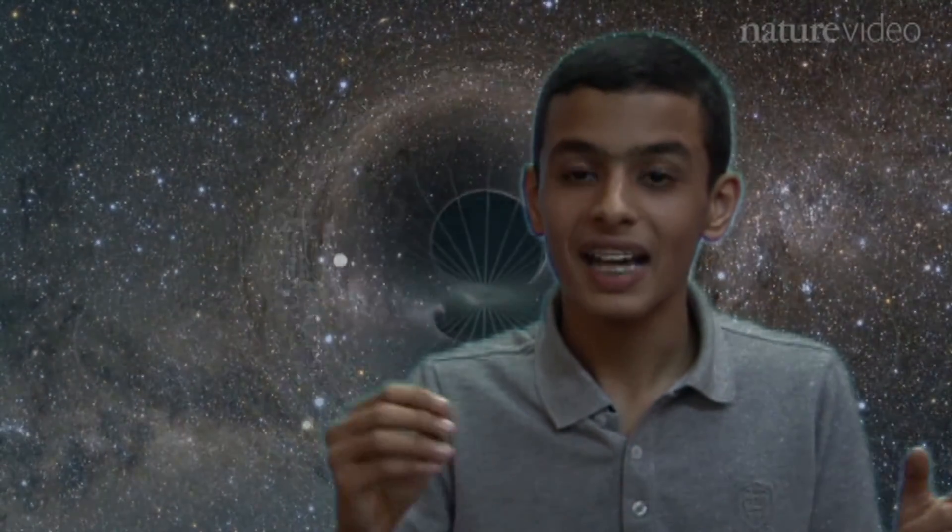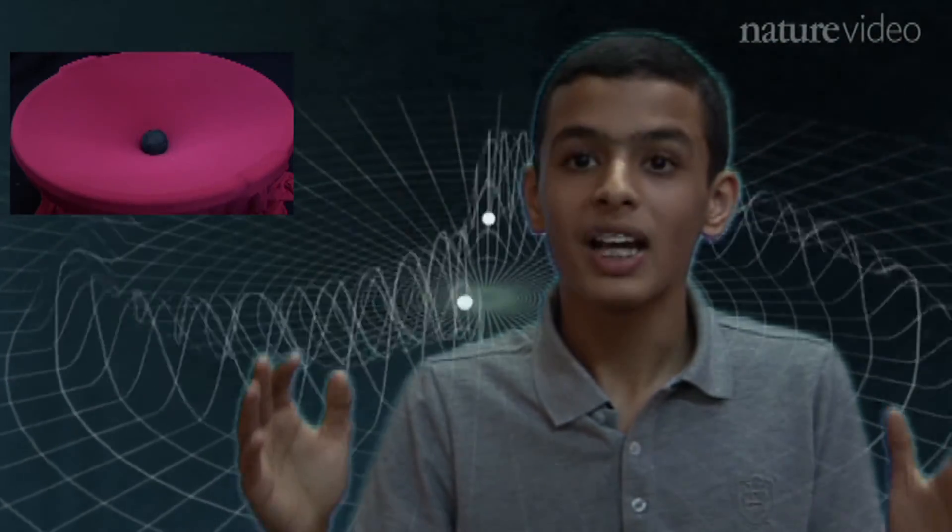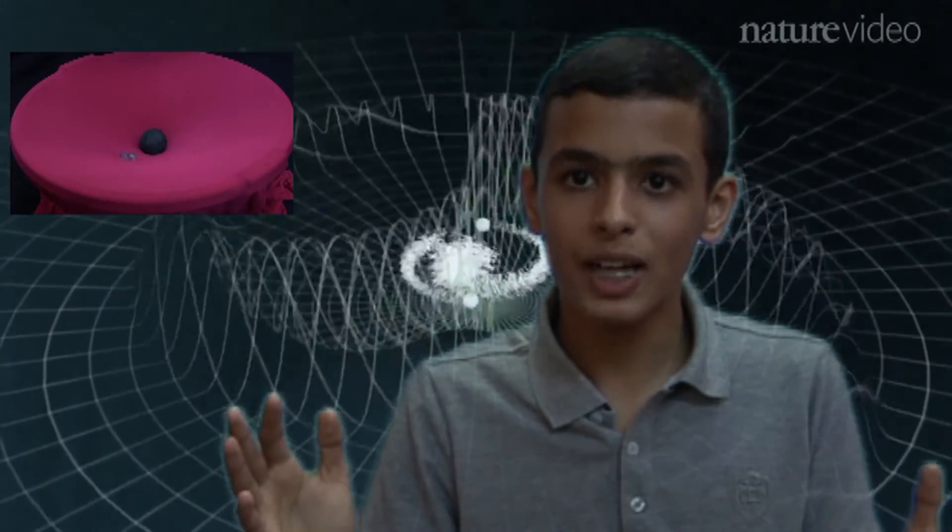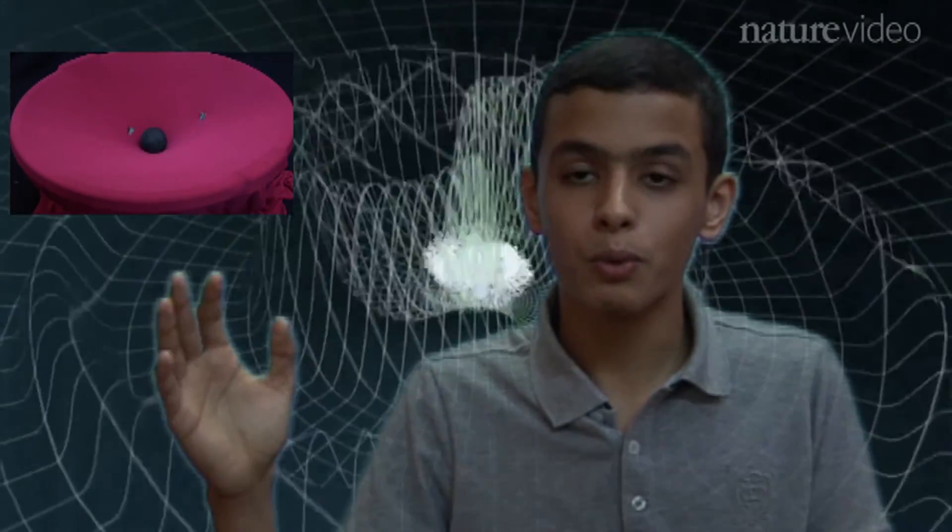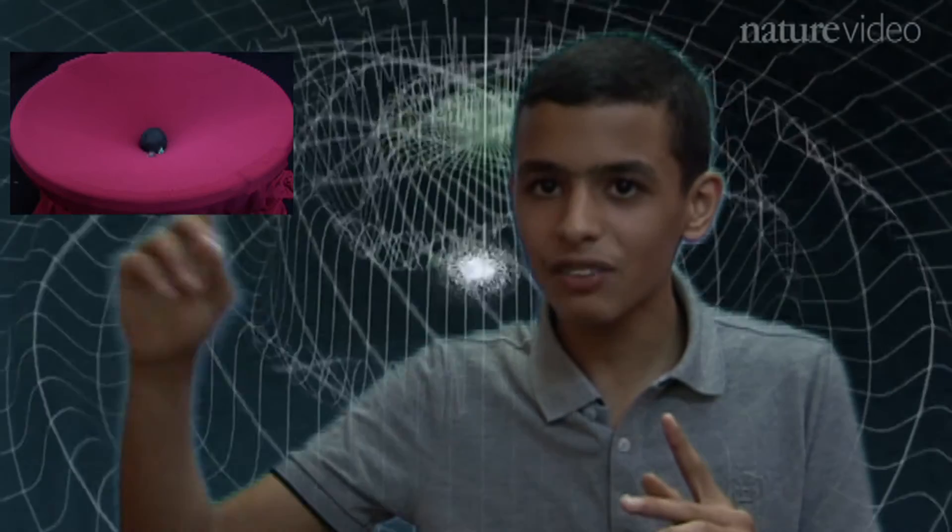Now suppose if three black holes get close so that they cannot escape each other's gravity, they will spiral towards each other and merge to become one bigger black hole. A black hole merger would produce energy and send massive ripples through the space-time fabric of the universe. These ripples are called gravitational waves.